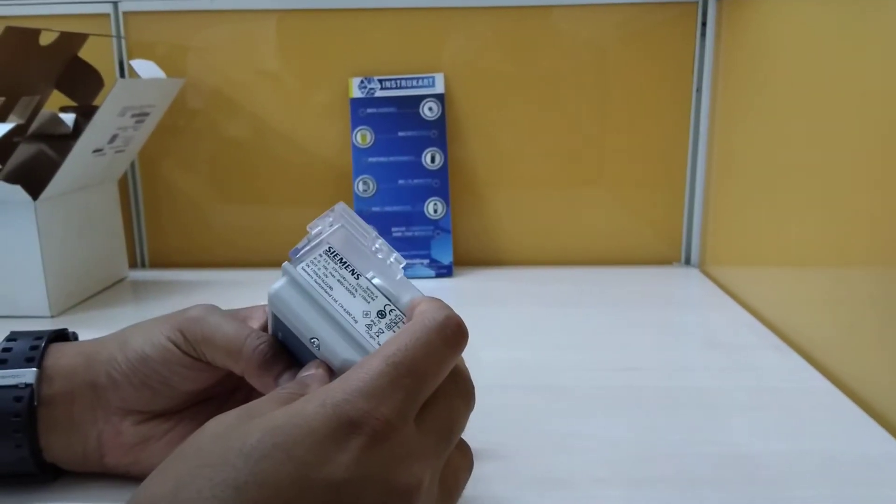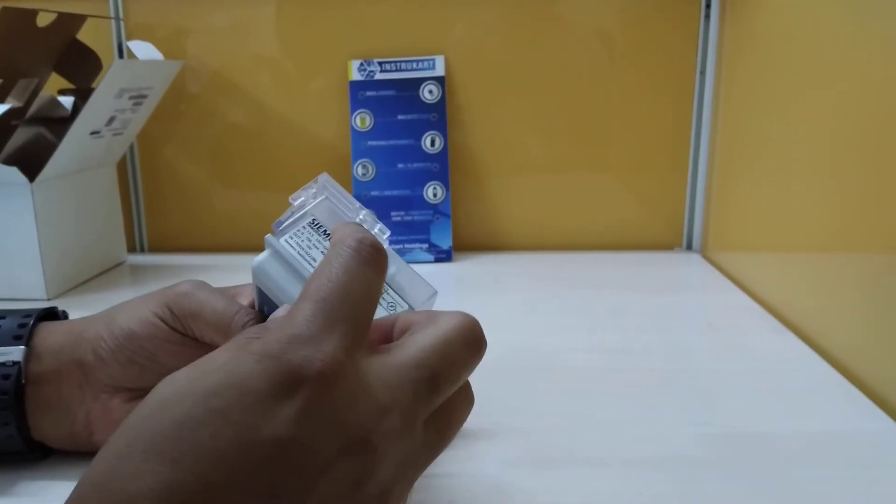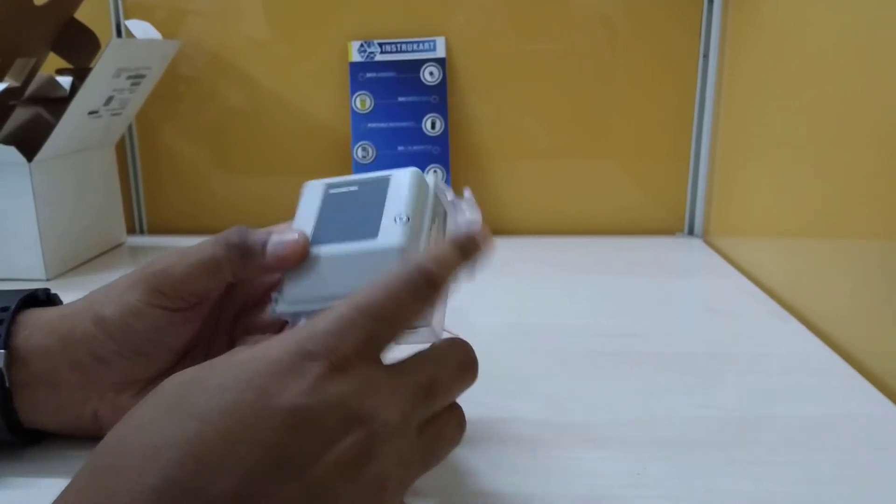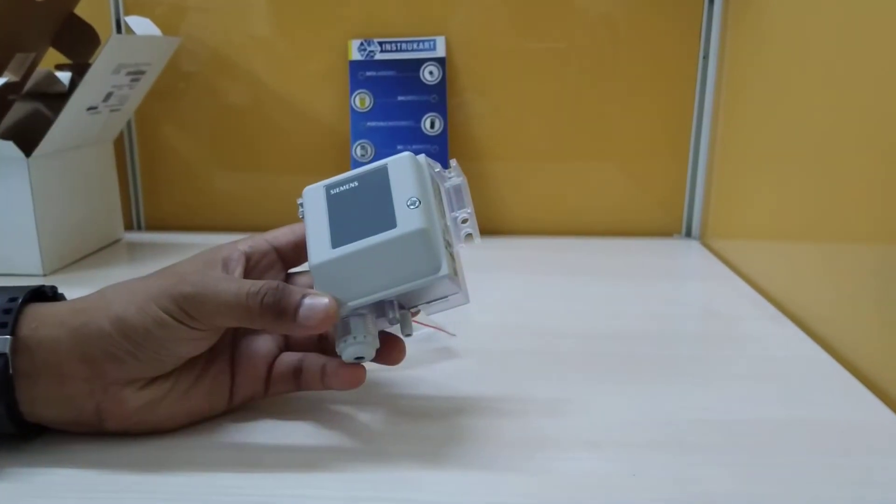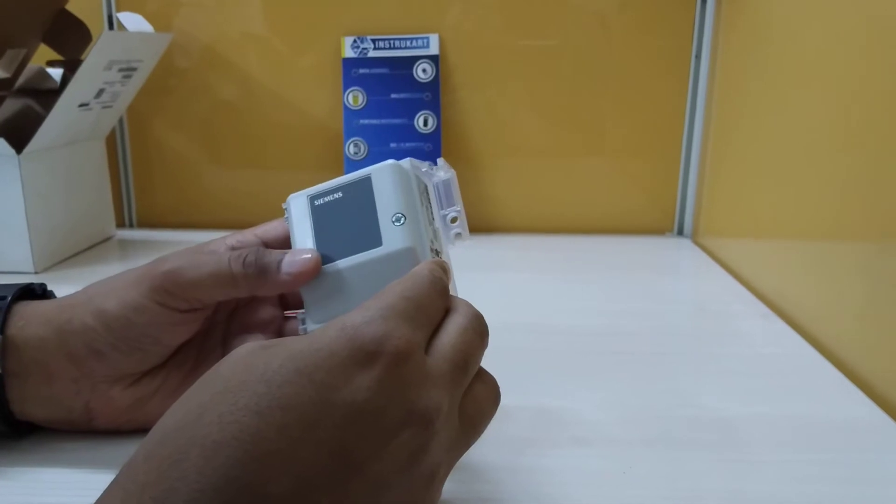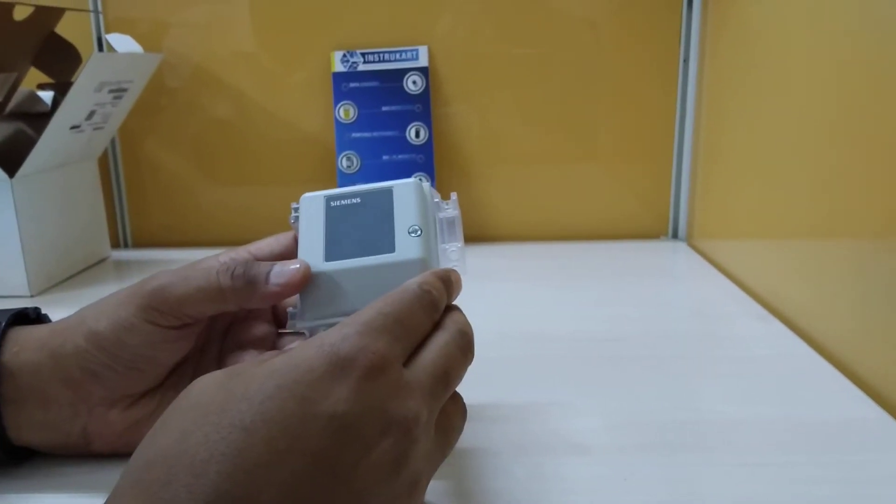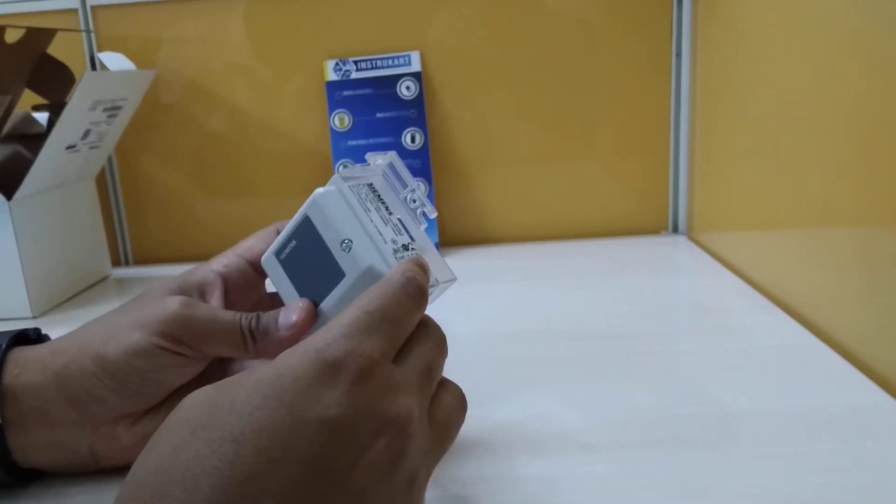We have the Siemens 30QBM2030 differential pressure transmitter, which has a range of 0 to 3000 Pascal configurable within that range, and it has an accuracy of plus or minus 3% on full scale.